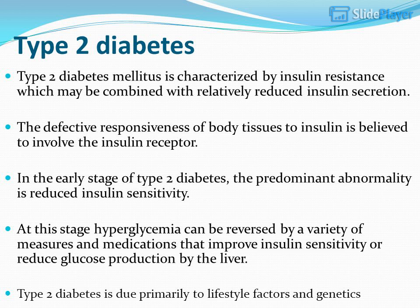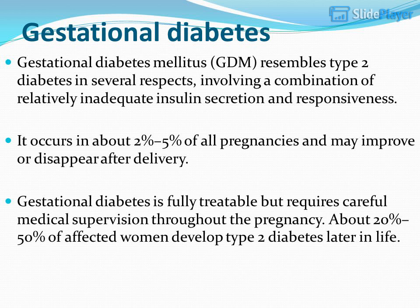Type 2 diabetes mellitus is characterized by insulin resistance, which may be combined with relatively reduced insulin secretion. The defective responsiveness of body tissues to insulin is believed to involve the insulin receptor. In the early stage, the predominant abnormality is reduced insulin sensitivity. At this stage, hyperglycemia can be reversed by measures and medications that improve insulin sensitivity or reduce glucose production by the liver. Type 2 diabetes is due primarily to lifestyle factors and genetics.